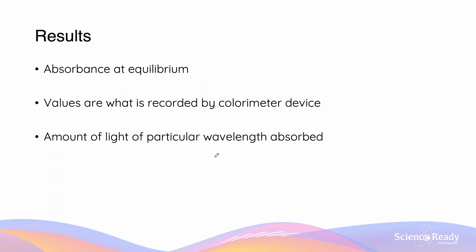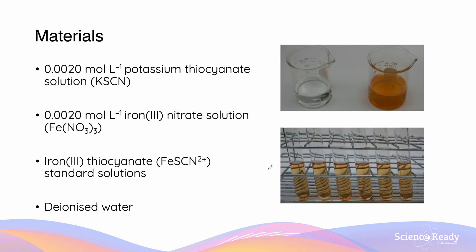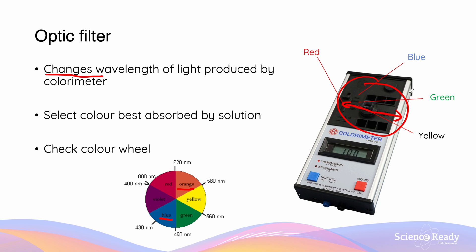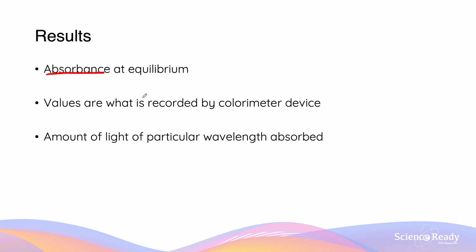Once we've blanked our colorimeter, we can then check the absorbance values for the four solutions we prepared and measure them in the colorimeter. Since the solutions are orange, they must be absorbing mostly blue light. This means we are going to set our optic filter to the blue color, since the solution is on the opposite side of the color wheel. The absorbance values given to us by the colorimeter are the amount of light absorbed of a particular wavelength for that sample. There are no formulas which we need to input — we simply need to get the values from the device.